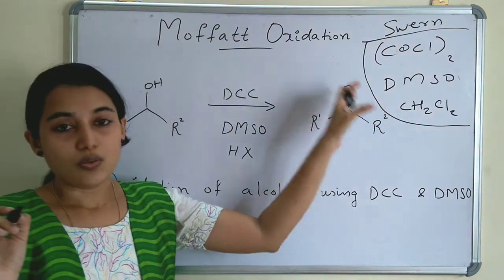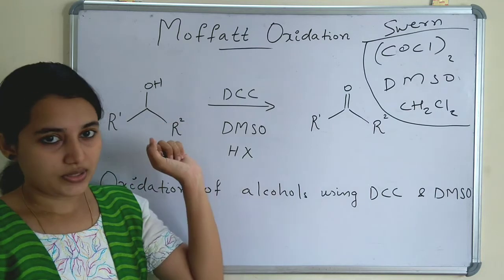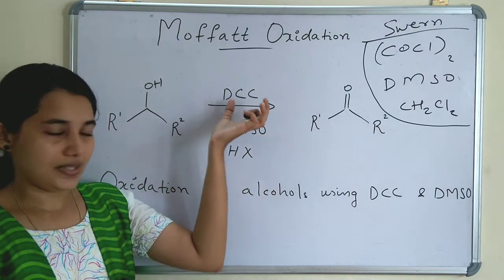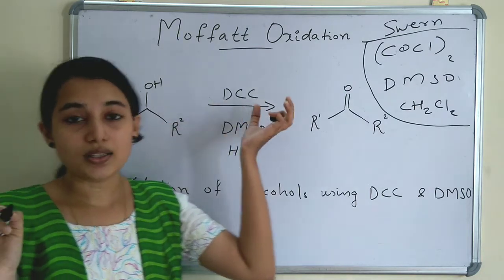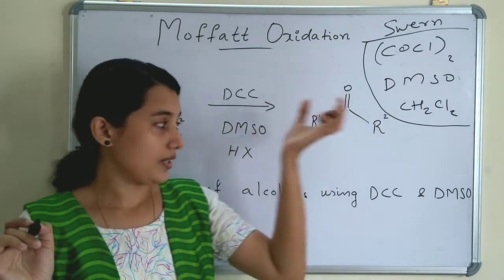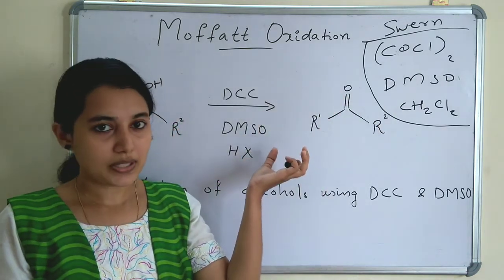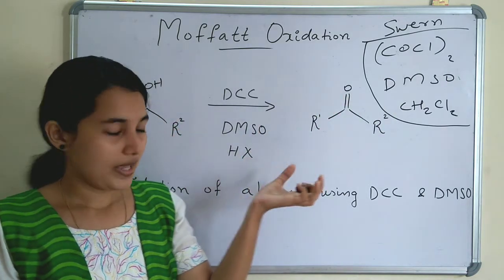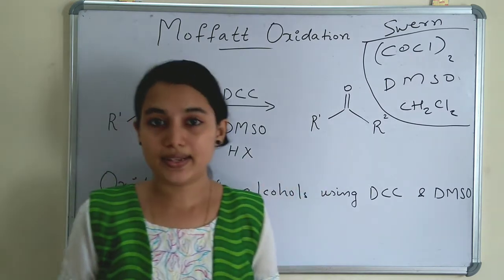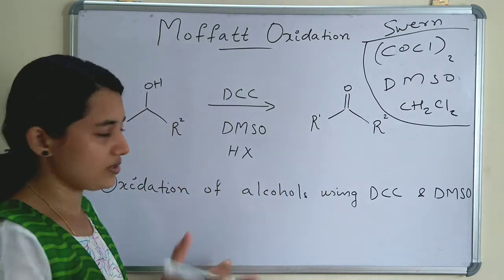What are the reagents of Moffat Oxidation? Moffat Oxidation uses DCC, dimethylsulfoxide (DMSO), and an acid — such as carboxylic acid, amine, or HX (hydrogen halide: HF, HCl, etc.).